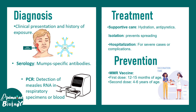The MMR vaccine is a mixture of live attenuated viruses — it contains three different types of viruses that are all inactivated but retain their antigenic components. The immune system recognizes them and mounts a response, so when the original virus attacks the body, it is prepared to fight it.